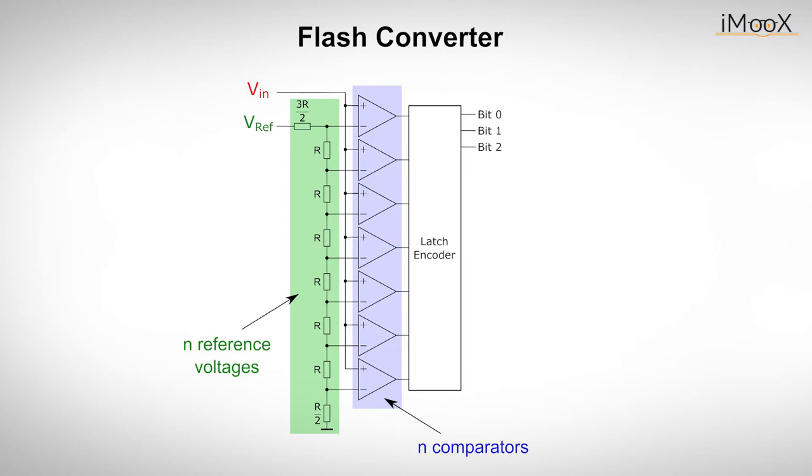The input of the priority decoder corresponds to the highest comparator activated by the input voltage. This circuit is only intended to illustrate the principle with which a flash converter works. Real ADCs do not work so clumsy. The circuit shown here nevertheless illustrates the problem of a flash converter. For a sampling depth of only 3 bit, 7 operational amplifiers are needed.